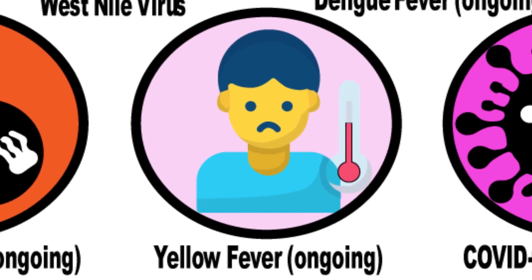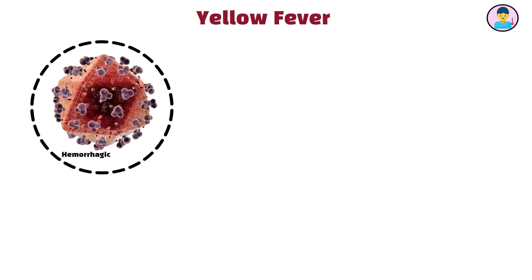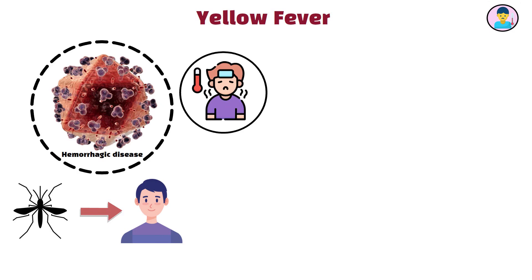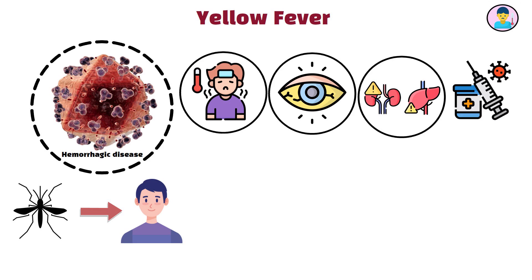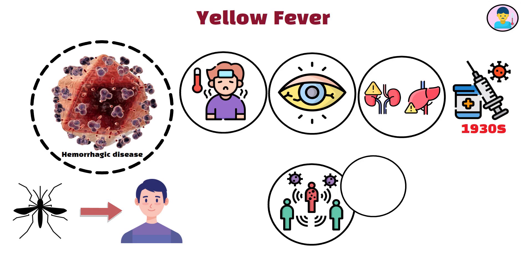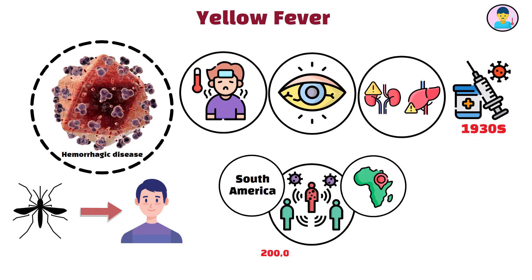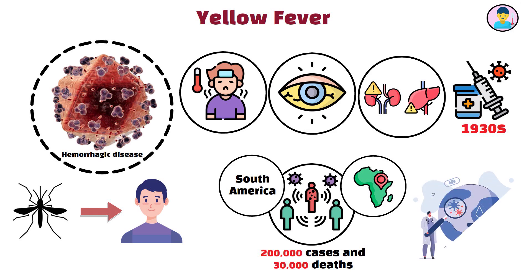Yellow fever, ongoing. Yellow fever is a viral hemorrhagic disease transmitted by infected Aedes mosquitoes. It causes high fever, jaundice, and severe liver and kidney damage. While a safe and effective vaccine has been available since the 1930s, yellow fever outbreaks continue to occur in Africa and South America, with an estimated 200,000 cases and 30,000 deaths annually. Vaccination campaigns and mosquito control efforts aim to reduce the burden of this potentially fatal disease.